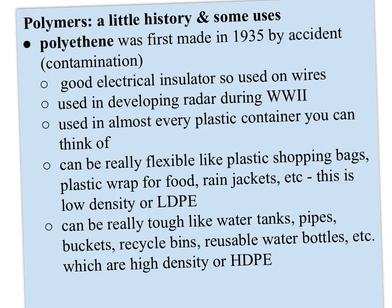The next couple of slides cover the history and uses of these polymers — not required memorization, just helpful context. Polyethene was the first polymer, made in 1935 by accident — actually a contamination. It's used as an electrical insulator on wires, was used in developing radar during World War II, and is found in virtually every plastic container. When flexible, it's low-density polyethene (LDPE); when tough like a Home Depot bucket or pipes, it's high-density polyethene (HDPE).